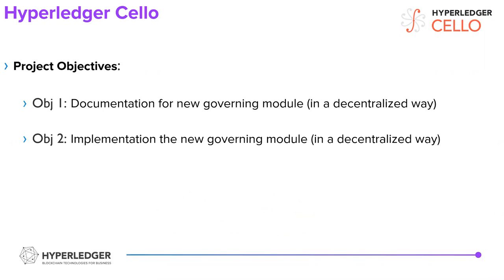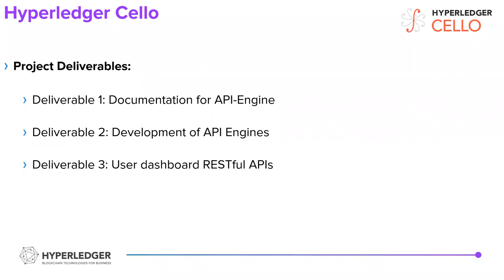The objectives of the project are: first, documentation for the new governing module, and also implementing some of the governing module. The deliverables are documentation for the API engine, development of the API engines, and the user dashboard RESTful APIs.